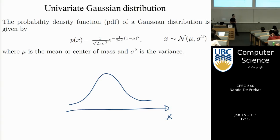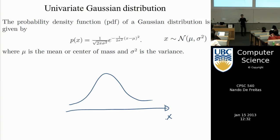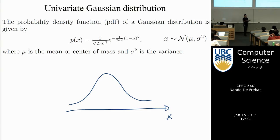Think of temperature as a random variable, or pressure — most of the concepts we talk about in real life are actually random variables. There's no such thing as temperature in an absolute sense; temperature is just a statistical estimate of how the molecules are colliding in this room, generating heat.